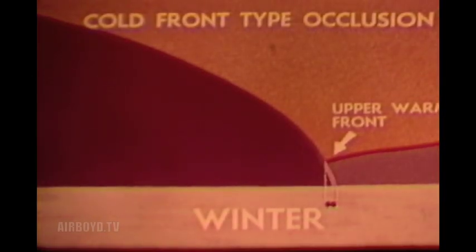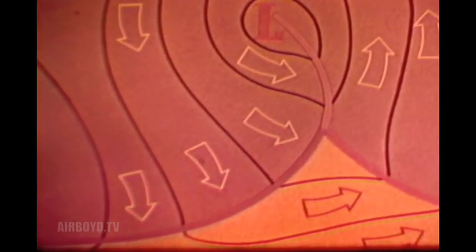The position of the upper warm front is very close to the occlusion at the surface. The map shows the cold front type occlusion as a purple line, but now an extension of the cold front. If the upper front is shown, it is depicted with a broken red line. The winds about this occlusion will also follow the pattern of the isobars. Simply stated, the warm front type occlusion has its upper cold front and the cold front type occlusion has its upper warm front.